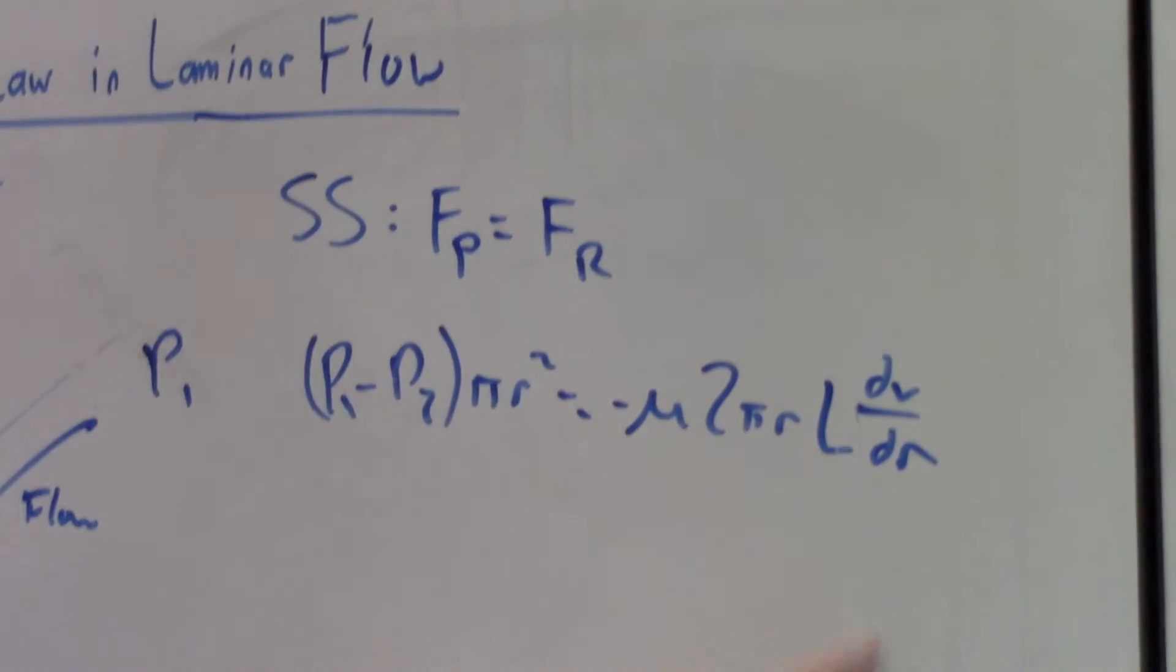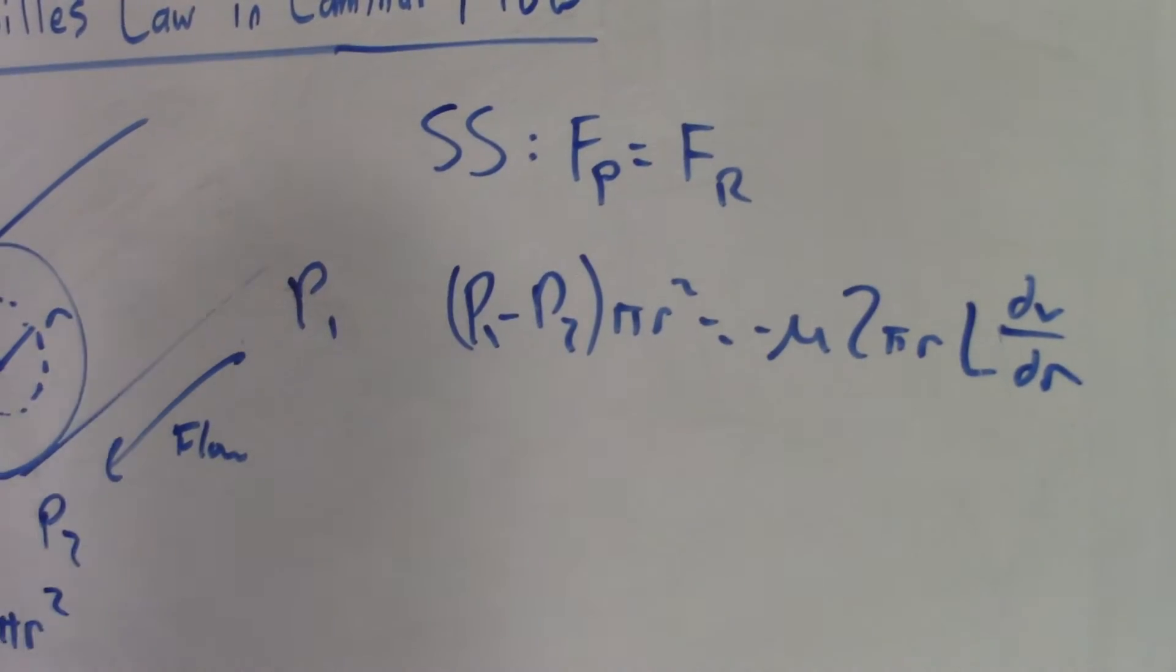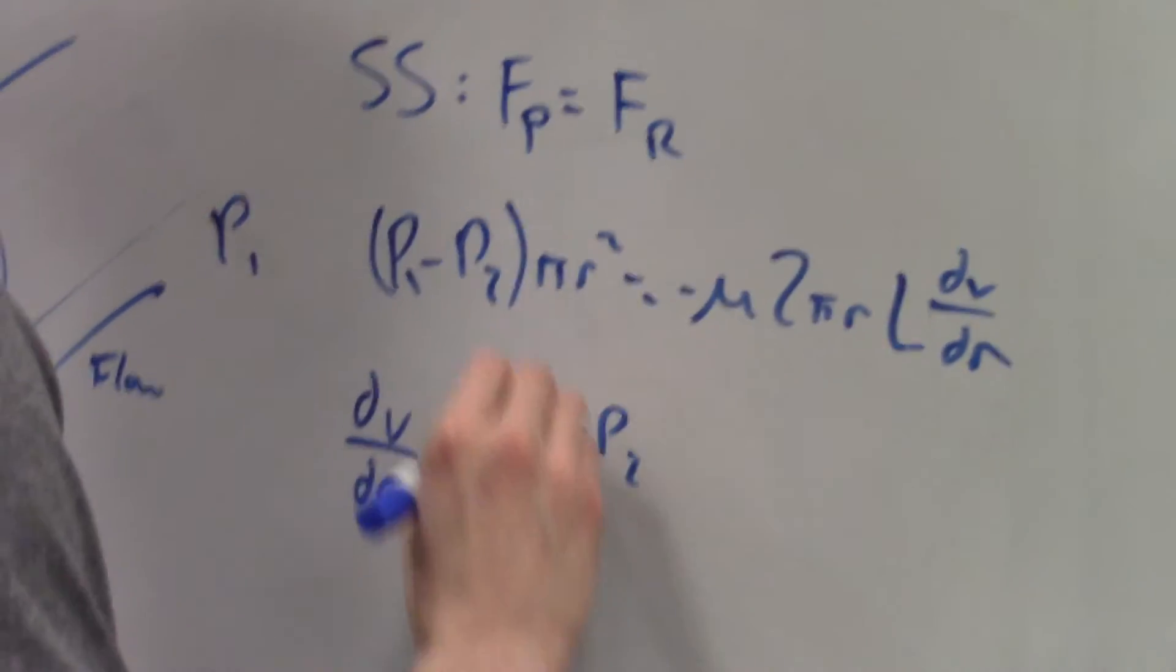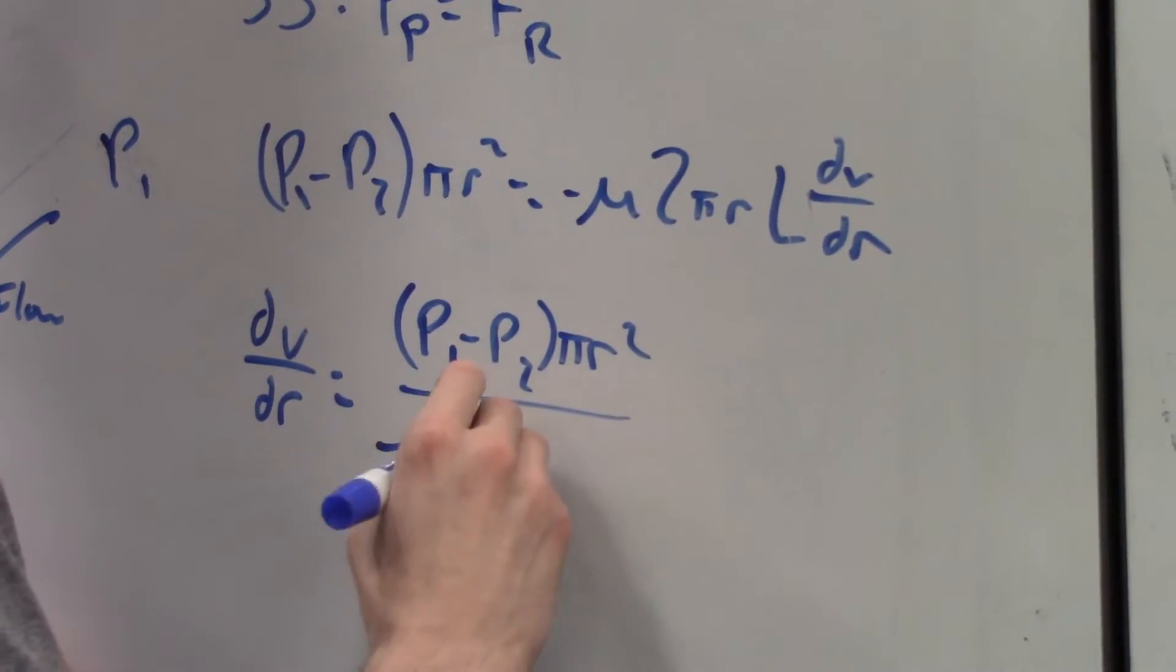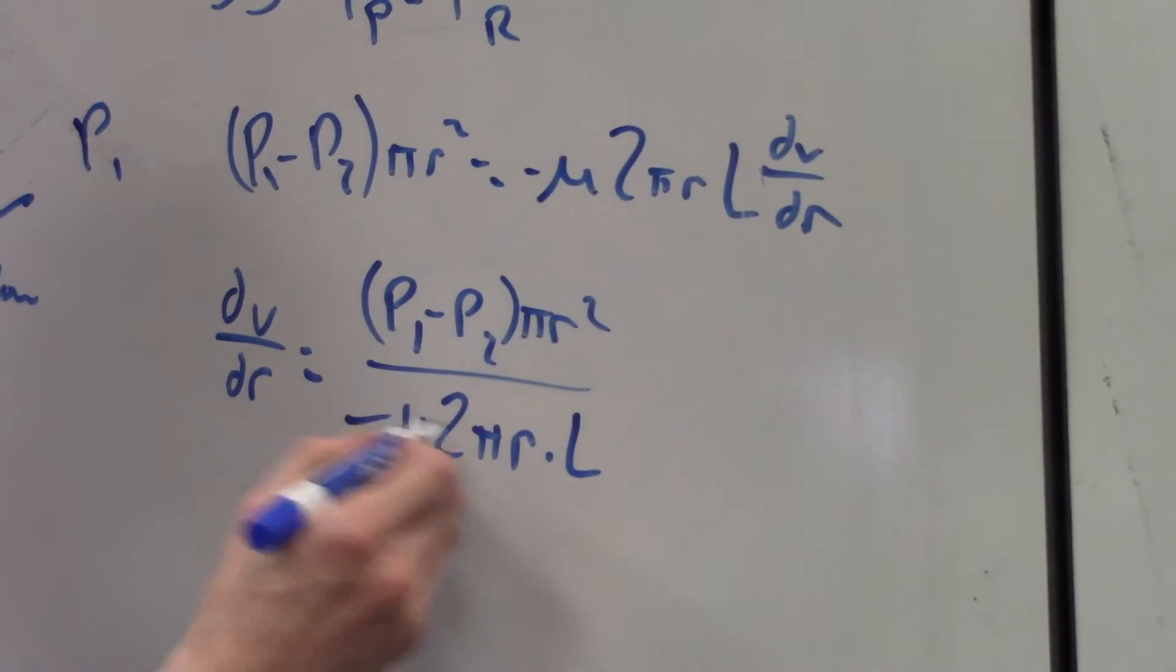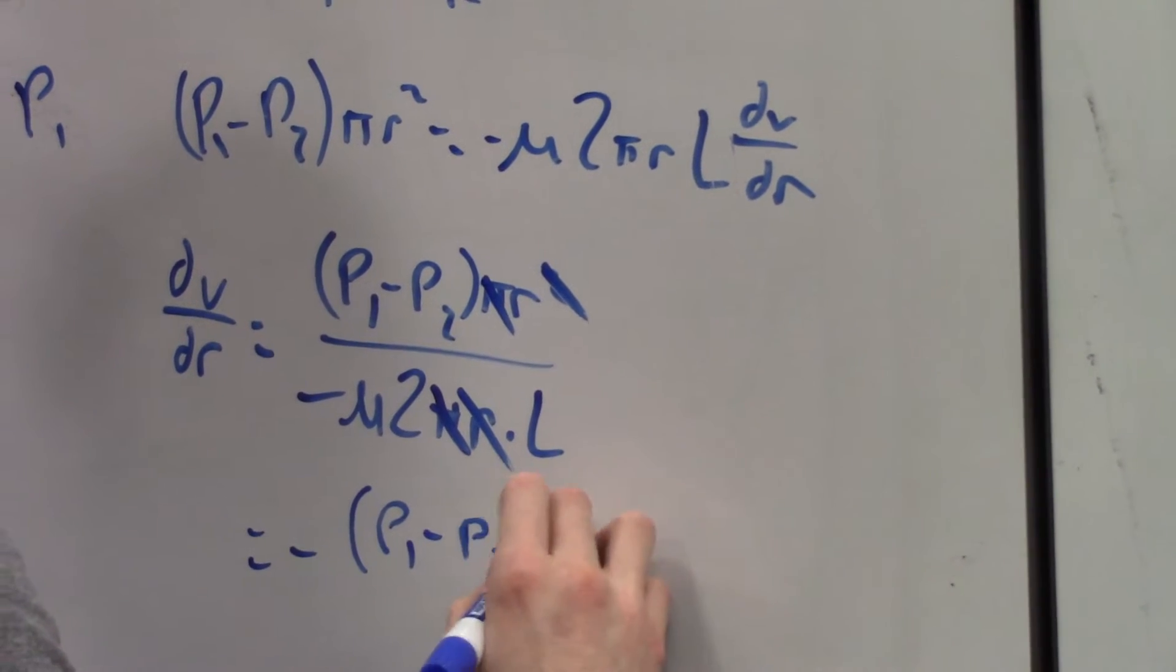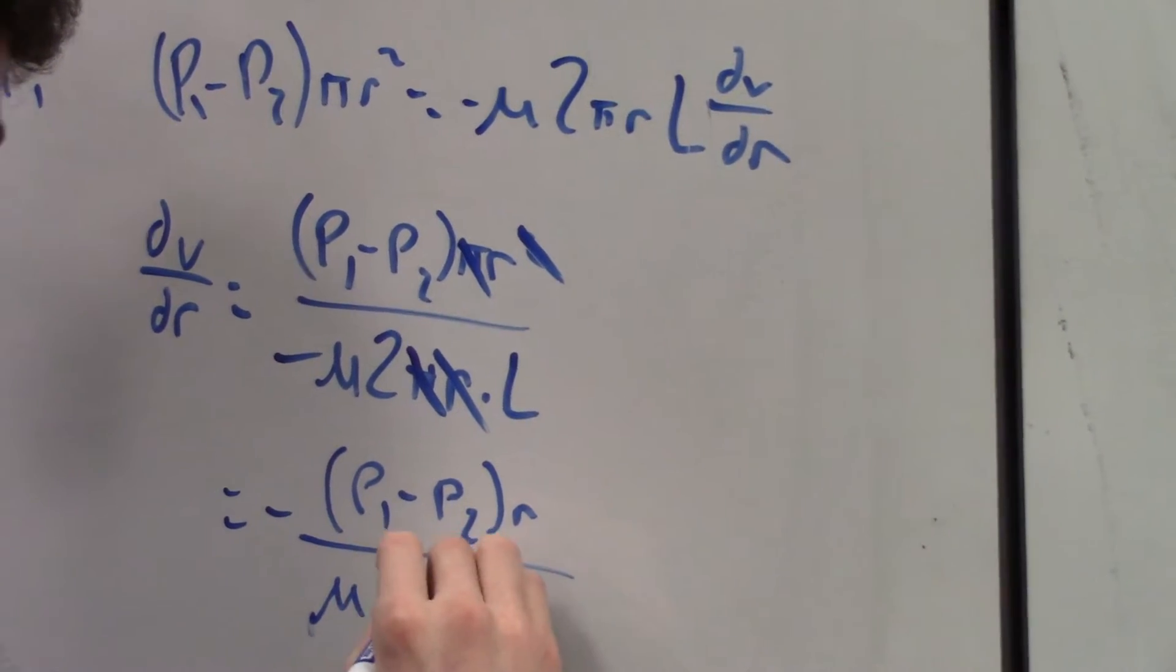Now we're going to solve for the differential and then separate the differential equations and integrate to get the velocity. So dV dR equals P1 minus P2 pi R squared. Bring this out, negative viscosity 2 pi R times L. So we have some units canceling R, and we're left with negative P1 minus P2 times R over viscosity 2L.